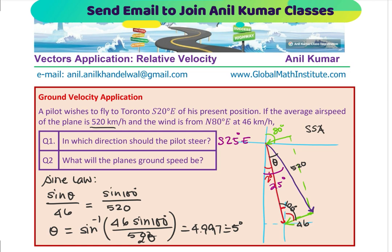What will be the plane's ground speed? Now we need to find the ground speed of the plane. We can again use the sine law. Since we know one angle is 5 degrees, we can find the other angle: 180 minus 100 minus 5. So 180 minus 100 is 80, take away 5 gives us 75 degrees. With that, you can find the ground velocity.